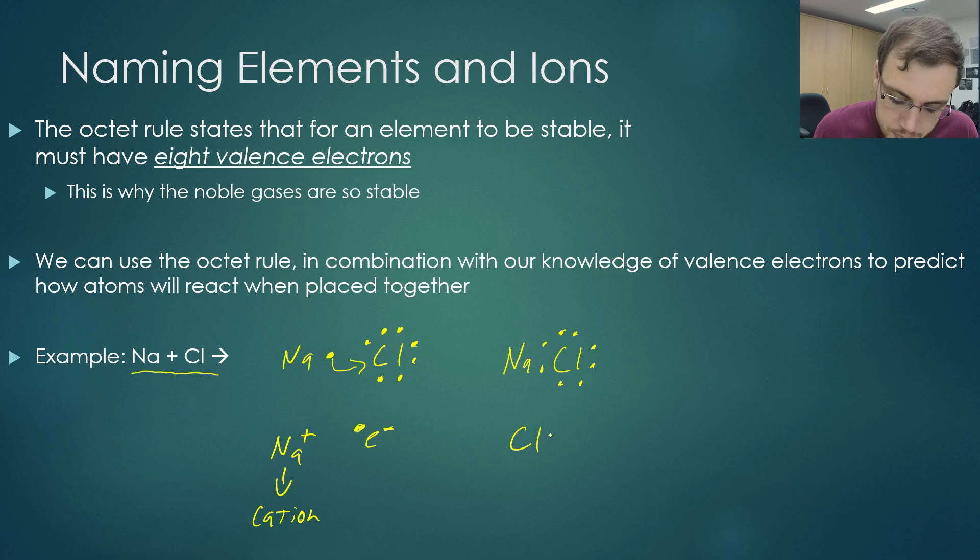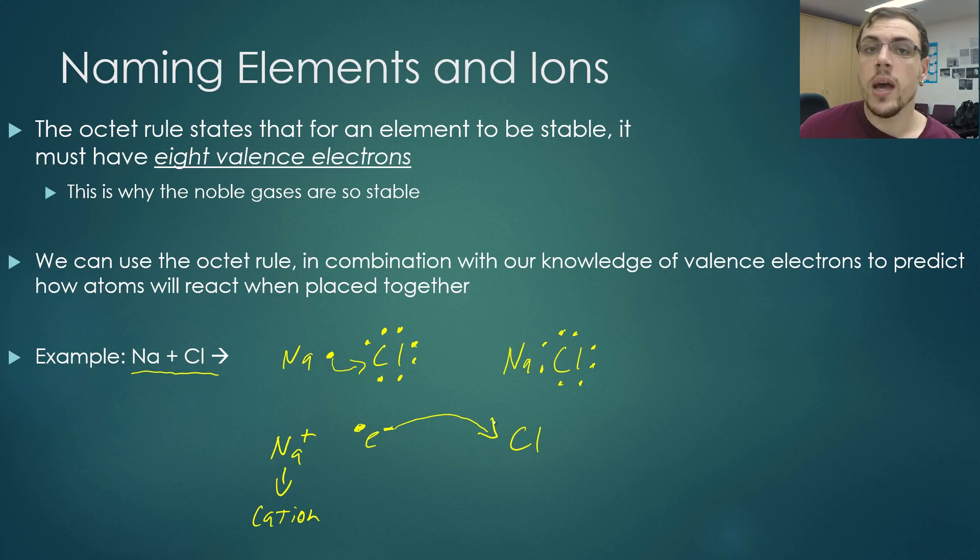Our chloride, chloride, it took this electron to become stable. Because chloride accepted that electron, and electrons are negatively charged, it means that chloride got more negative, which means that chloride is the anion.